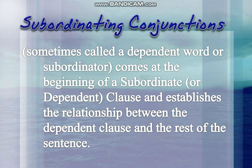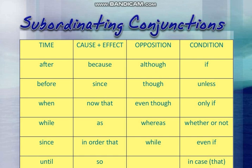Subordinating conjunctions are used for: time — after, before, when, while, since, until; cause and effect — because, since, now that, in order that; opposition — although, though, even though, while; and condition — if, unless, only if, whether or not, even if, in case that. These are all categories of subordinating conjunctions.